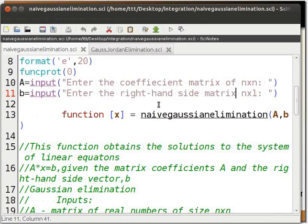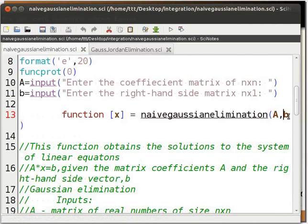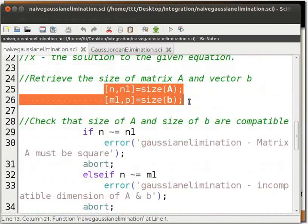Then we define the function naive Gaussian elimination. And we state that a and b are the arguments of the function naive Gaussian elimination. We store the output in variable x. Then we find the size of matrices a and b using the size command.